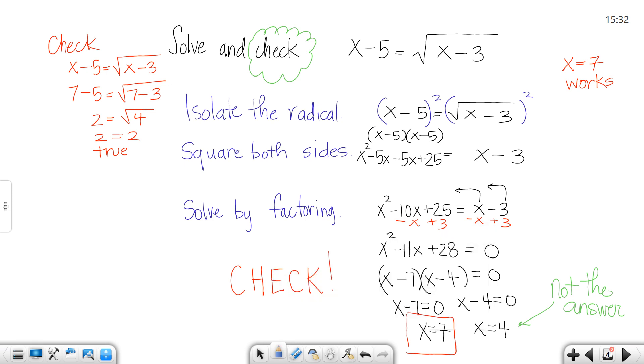So let's check the other one. Let's check 4. Remember my equation is x minus 5 equals the square root of x minus 3. So that would be 4. I'm checking 4. 4 minus 5 equals the square root of 4 minus 3. So 4 minus 5 is a negative 1 and the square root of 1 would be 1. So what I get here is a false statement. Negative 1 does not equal 1. So that means x equals 4 is bad.